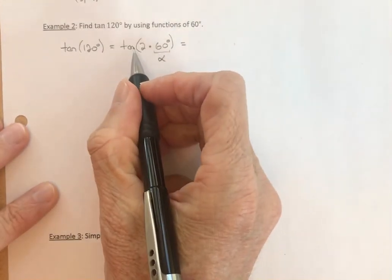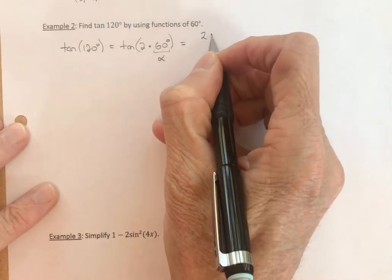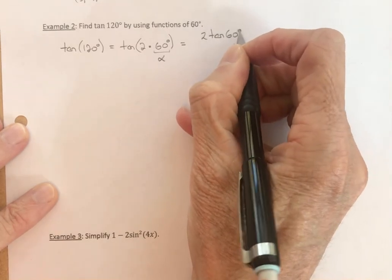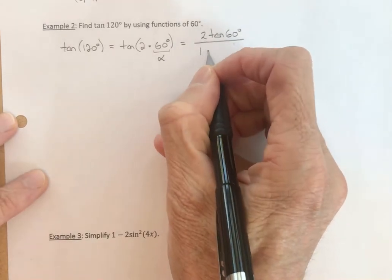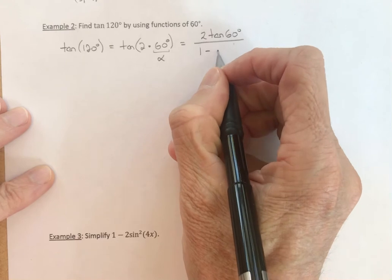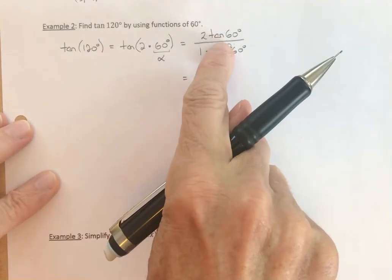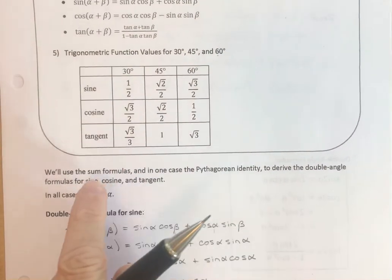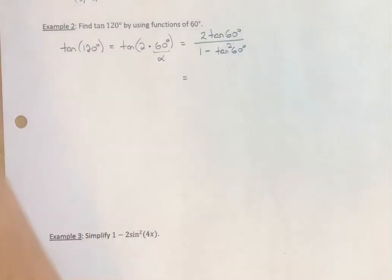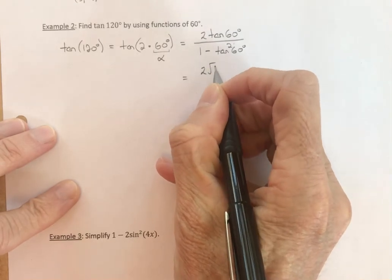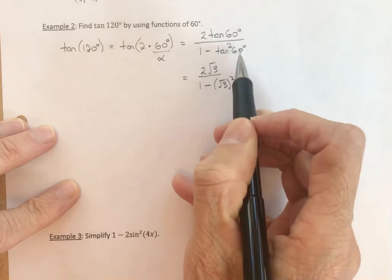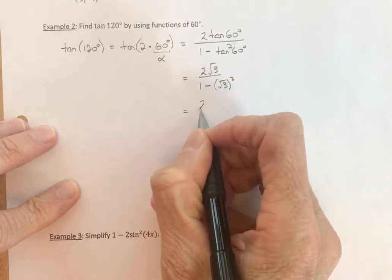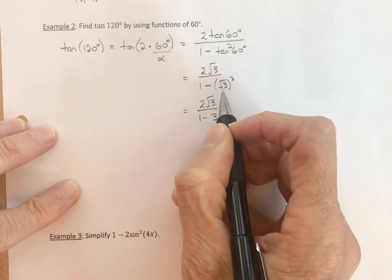The double angle tangent formula gives us two times the tangent of alpha divided by one minus the tangent of alpha squared. The tangent of 60 degrees from the unit circle is the square root of 3. So this becomes two times the square root of 3 divided by one minus the square root of 3 squared, which equals two root 3 divided by one minus 3.